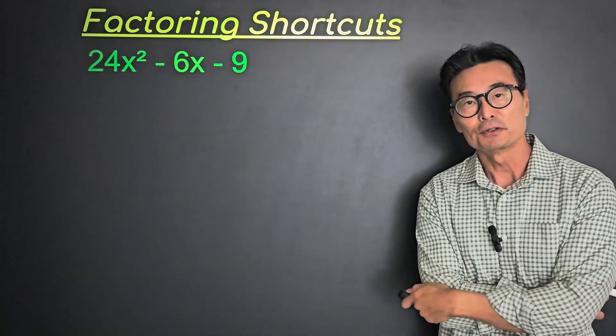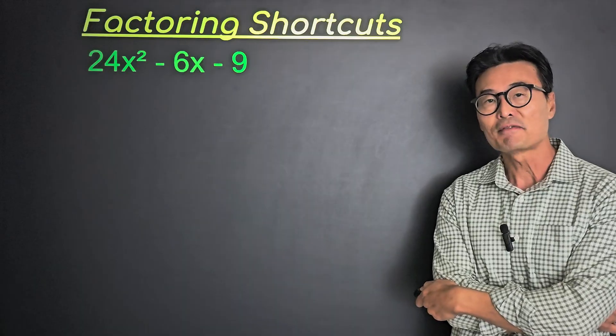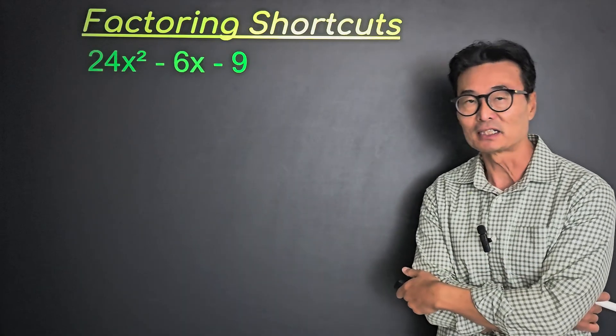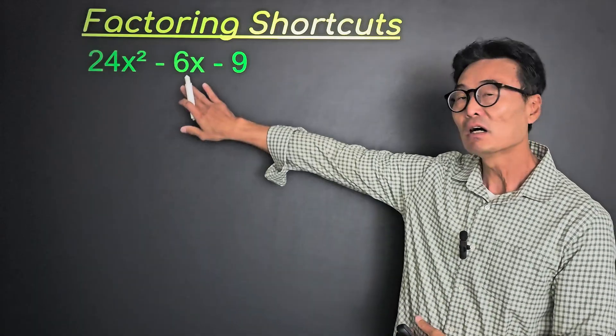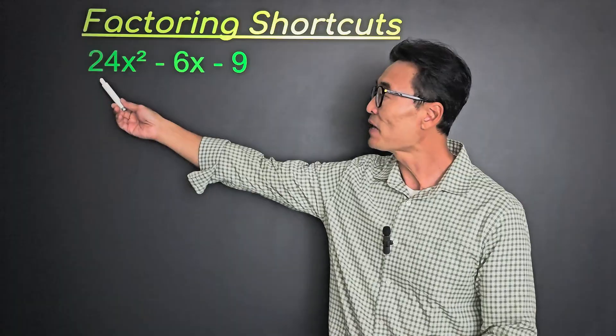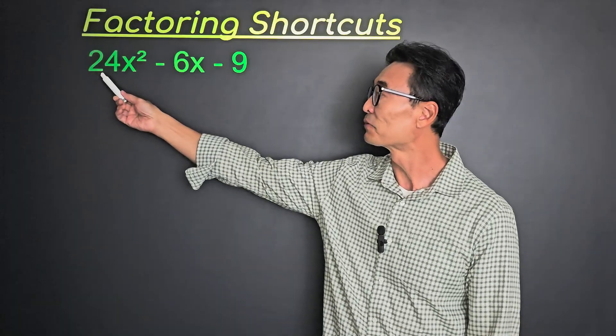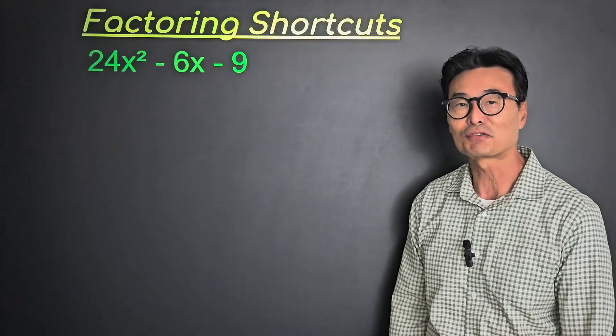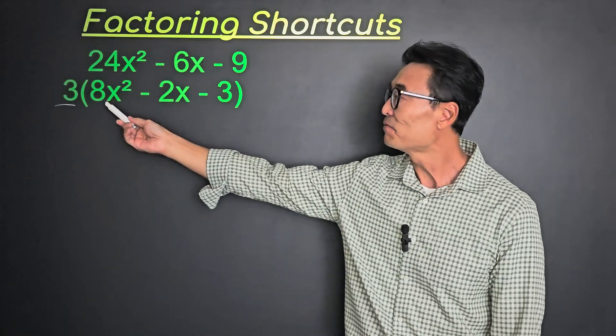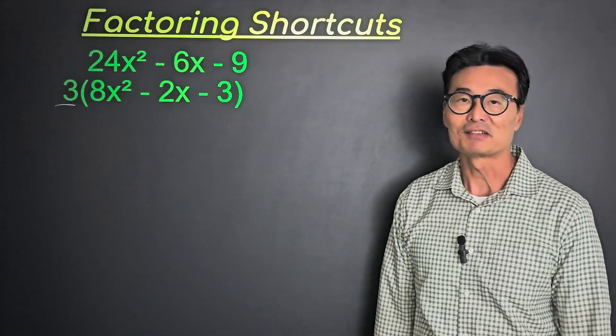In my other video called Cool Way to Factor, I've had many people ask why the method, the shortcut method I just showed you, does not work on a trinomial such as this. Notice that we're able to factor out a constant term 3 from the 24, 6, and 9. In such cases, the 3 needs to be factored out to the front first, and then factor what's in the parentheses.